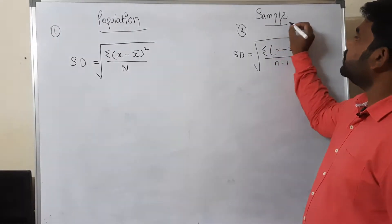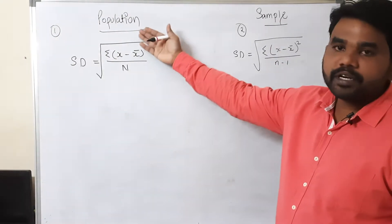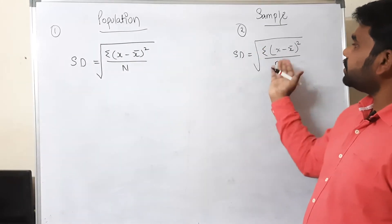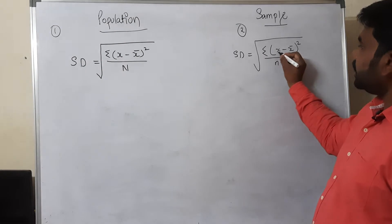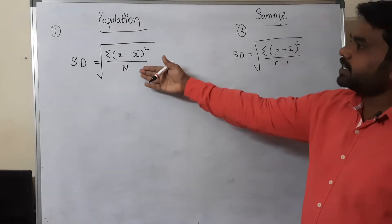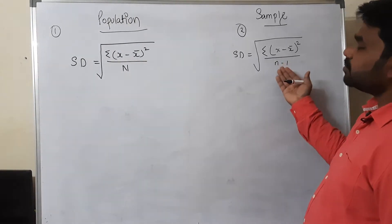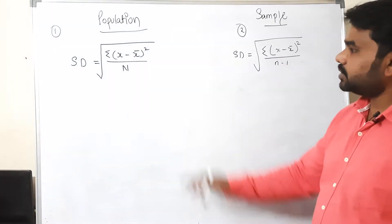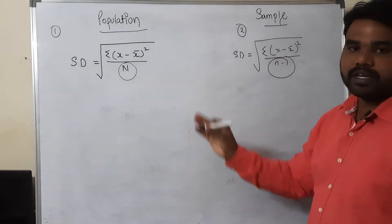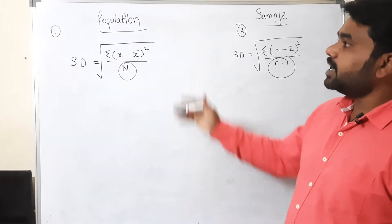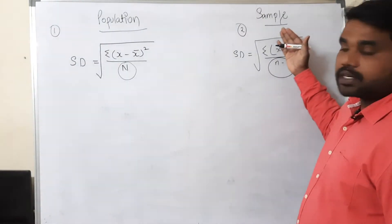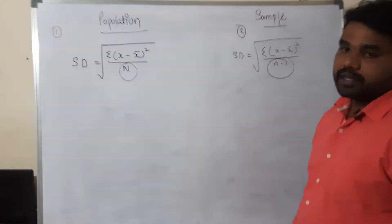When collecting data from a sample, use the (n minus 1) formula. Use the capital N formula for the population. Everything else is the same — the square root, the sum, the individual values, the mean, and the squaring. The only difference between these two formulas is the denominator: capital N for population and (n minus 1) for sample. Both formulas are correct — this is the only distinction.